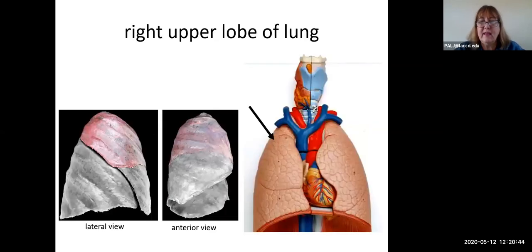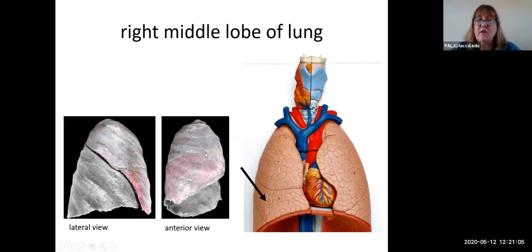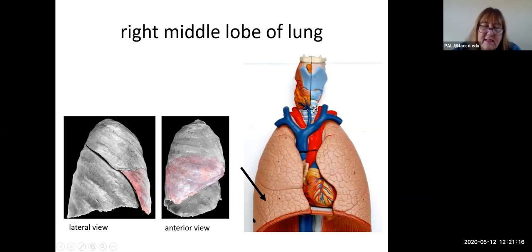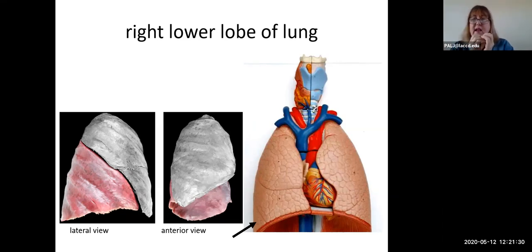Looking at the models on the right and pictures on the left: anteriorly, the upper half of what you normally see is the right upper lobe, also called the right superior lobe. Most of what you see anteriorly is the right middle lobe. Way down in the corner anteriorly you only see a tiny bit of the quite large inferior lobe, or right lower lobe. From an anterior view on the models you're only seeing a little bit of it.